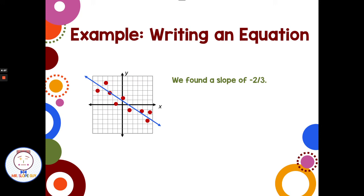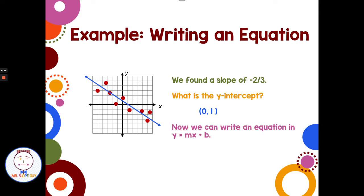Now, if we wanted to write an equation for our line of best fit — we have the slope of negative two-thirds. We also need the y-intercept, which looks like it's crossing the y-axis at one. So we have a y-intercept at (0, 1). Using slope-intercept form y equals mx plus b, we replace m with negative two-thirds and b with one, giving us y equals negative two-thirds x plus one. Starting at the y-intercept of one, going down two and right three puts us back on the line.